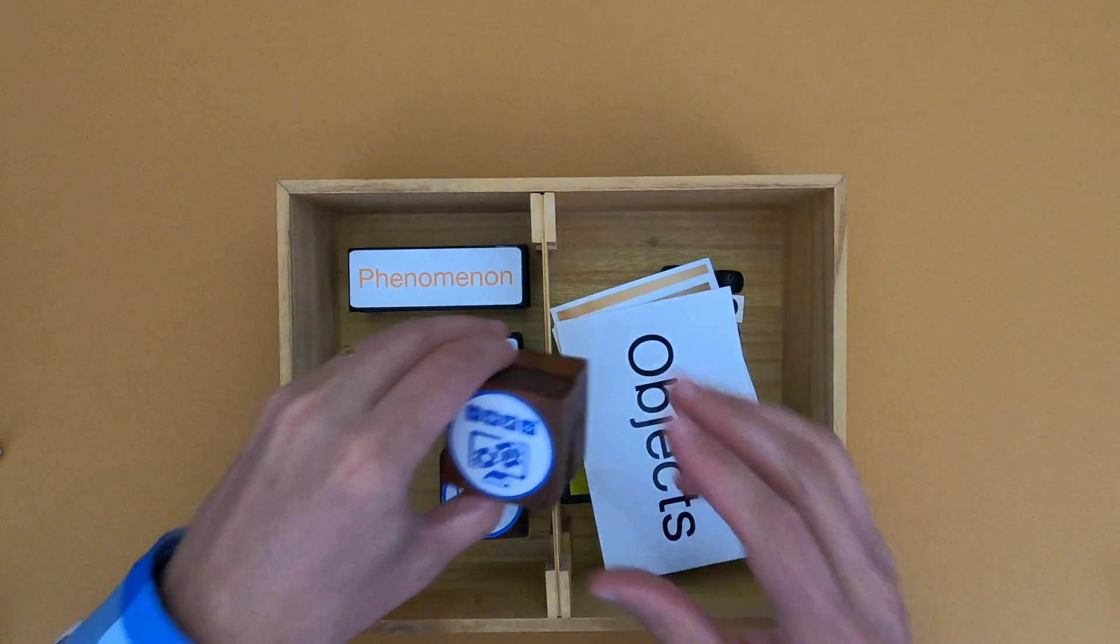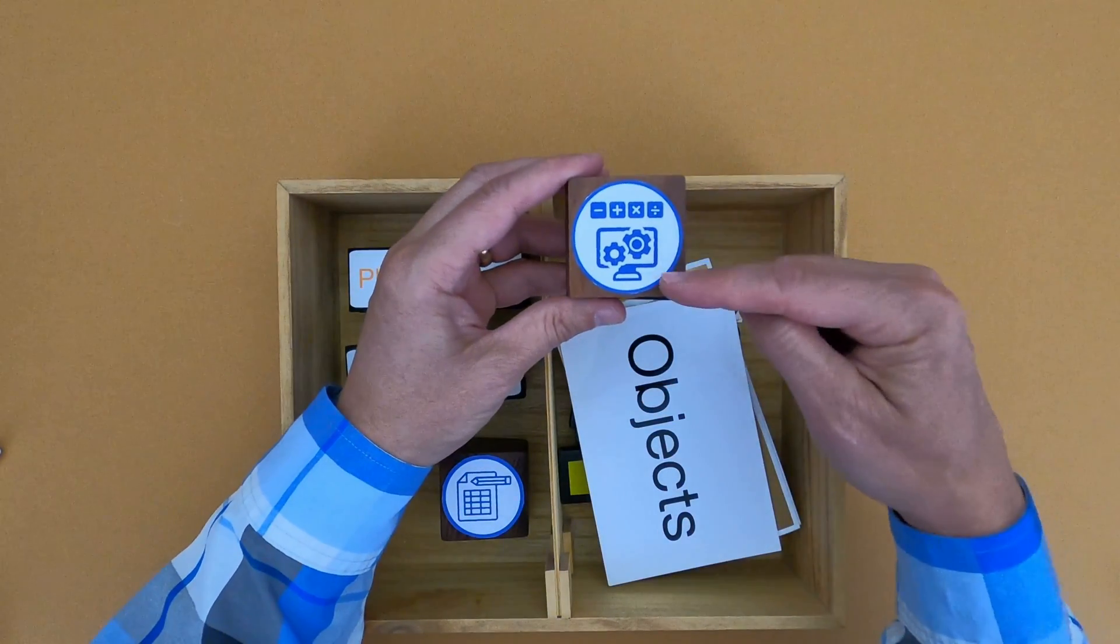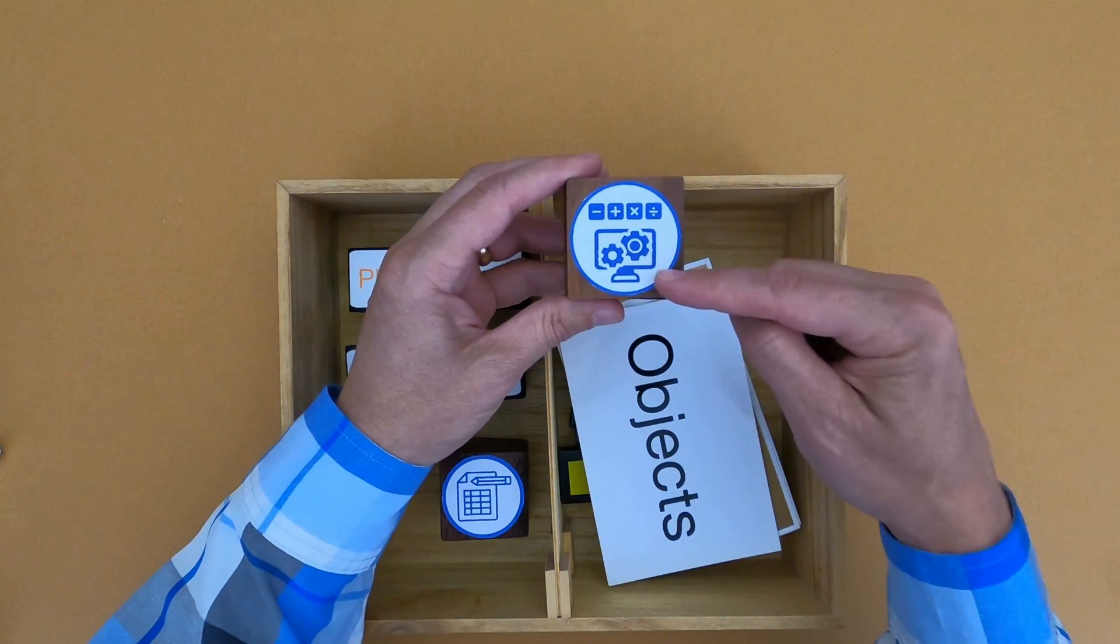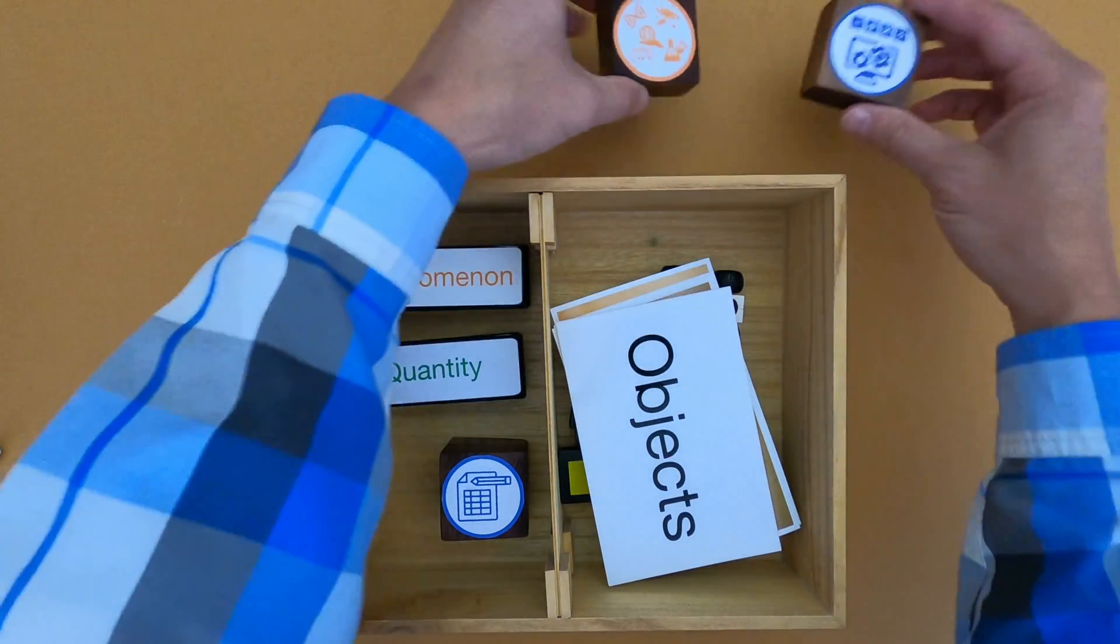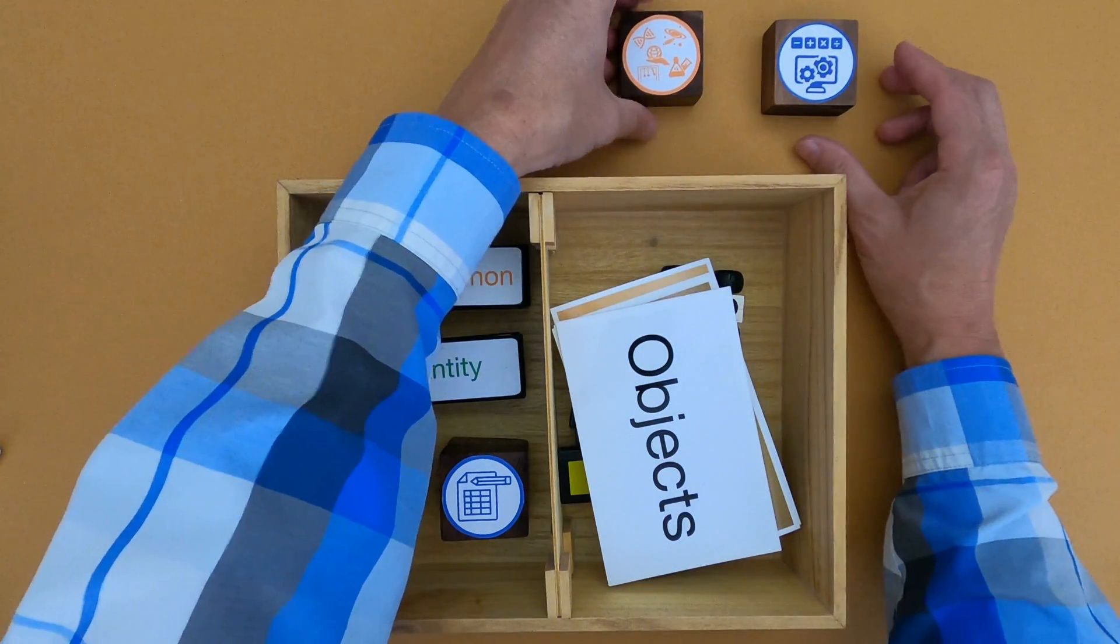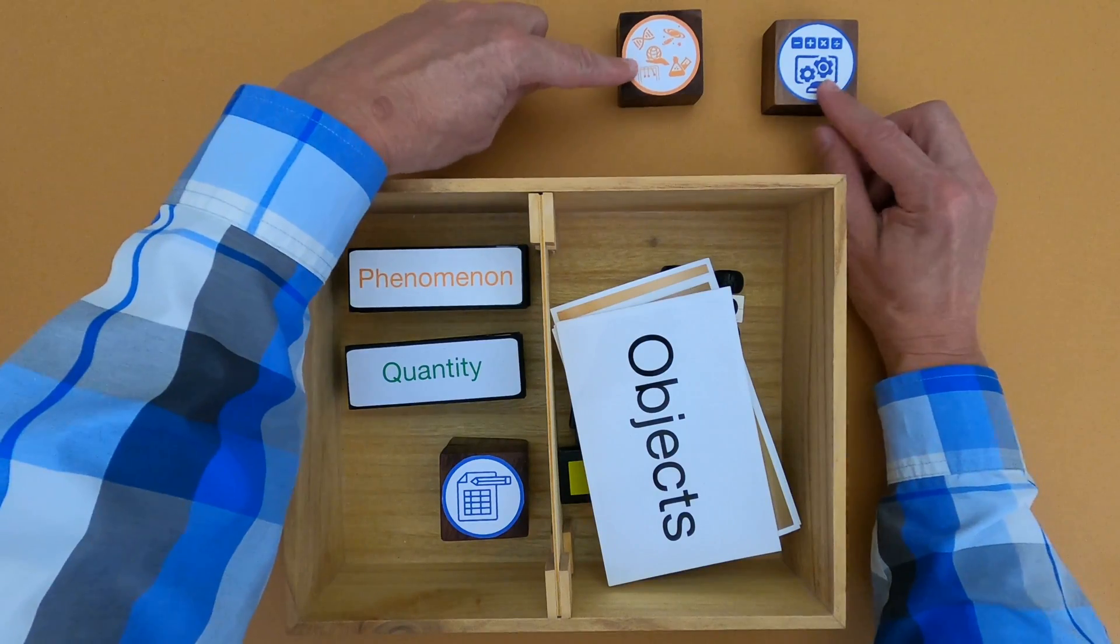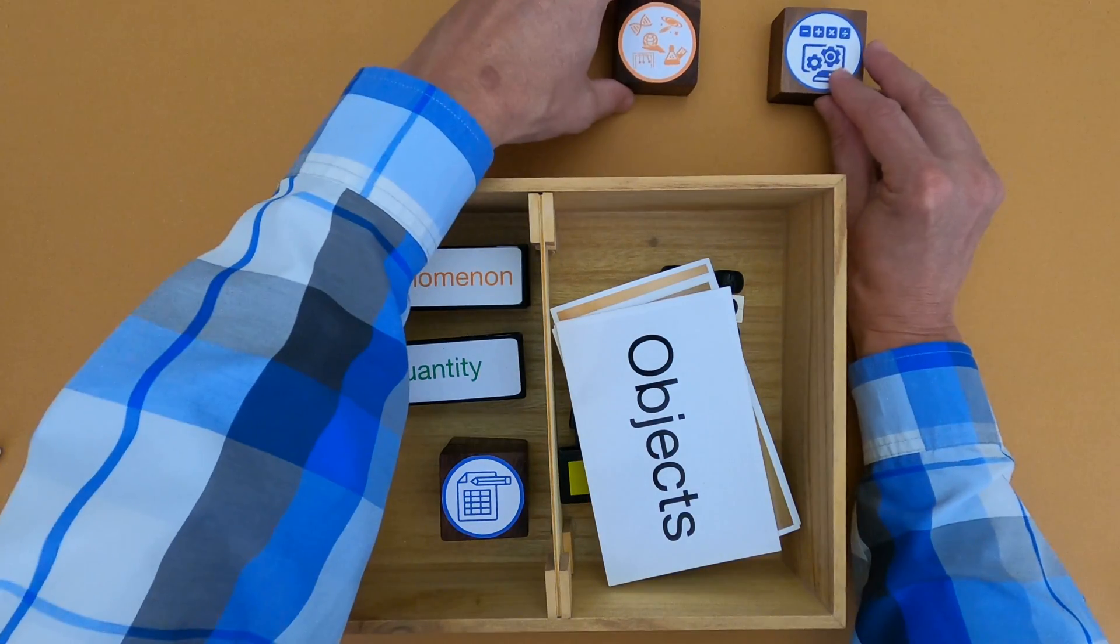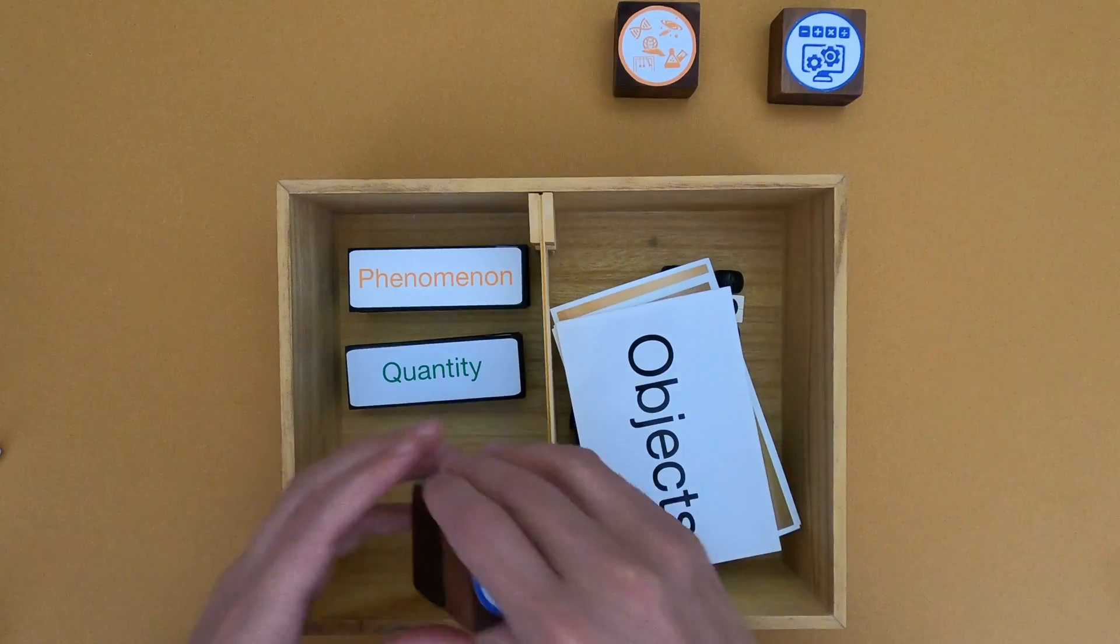The icon that represents this practice includes both math and computational symbols. Computation, or computers, will be important a little bit later. But you always want to start by identifying what's the phenomena that you're going to use mathematical thinking on.